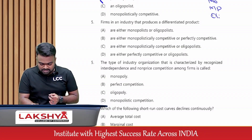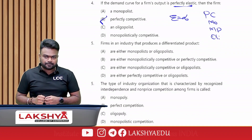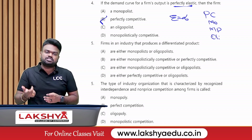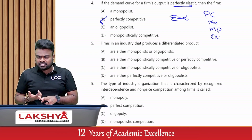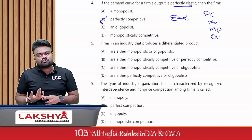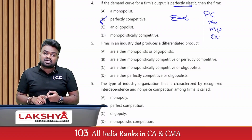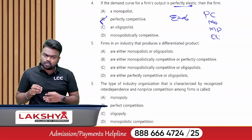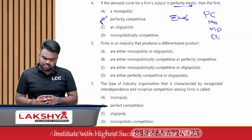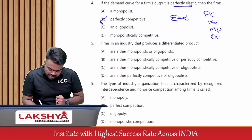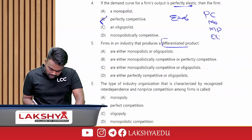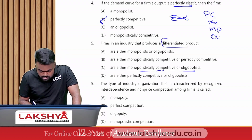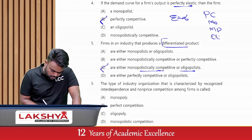Fifth question: firms in an industry that produces a differentiated product. In the PC market, goods are homogeneous; in monopoly there is only one product; in monopolistic competition and oligopoly, goods are differentiated. So differentiated products are found either in monopolistic competition or oligopoly. The answer is option C.